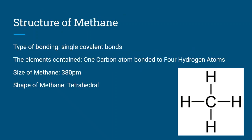The structure of methane: the Lewis structure of methane shows a carbon in the middle with four hydrogens attached to carbon. Methane is a single covalent bond that contains one carbon atom bonded to four hydrogen atoms. The size of methane is 380 pm, and it is tetrahedral.